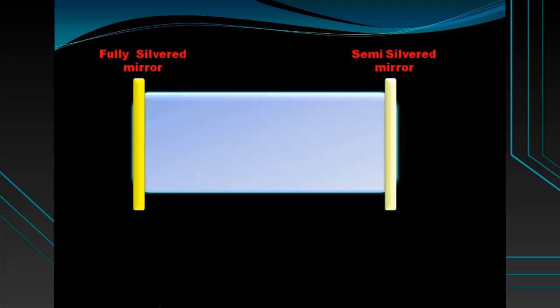In a laser, the working substance — in which population inversion is to be achieved — is placed in a specially designed cylindrical tube called an optical cavity or resonance cavity. It consists of a pair of mirrors facing each other. These mirrors could be plain or curved. One mirror is made fully silvered and reflecting, and the other is partially reflecting so that an intense beam can emerge out of it, acting as an optical window. This optical cavity makes the energy density large — energy density means energy per unit volume, i.e., the number of photons per unit volume.